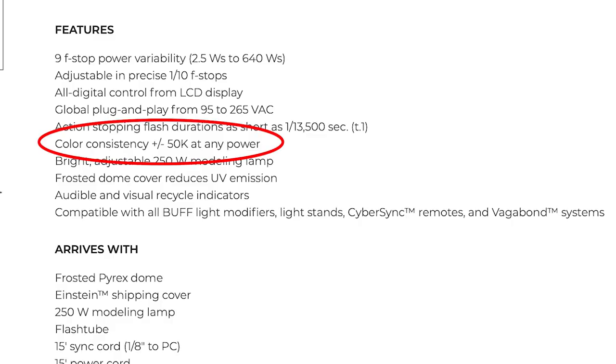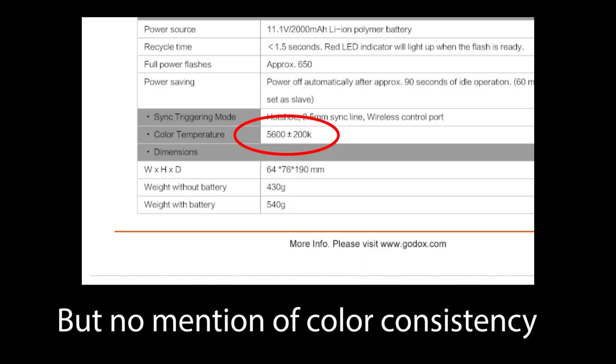Also understand what the guide number means so that you can compare flash outputs between units quickly and accurately. When a flash advertises high color consistency, you want to know exactly how high. The Paul C. Buff has a color consistency of plus or minus 50 Kelvin across the entire range — that's fantastic. Understand the difference between color temperature and color consistency. When a flash says it has a color temperature of 5600K plus or minus 200, that plus or minus 200 is the color of the light at full power. Color consistency is how that color changes as you increase or decrease the power — and that's important.